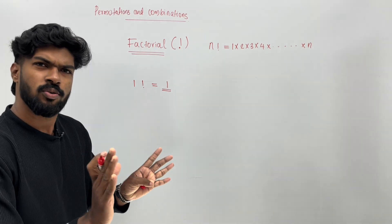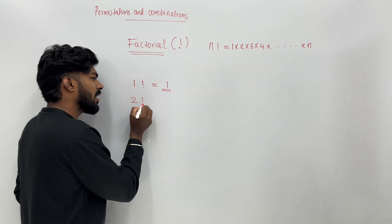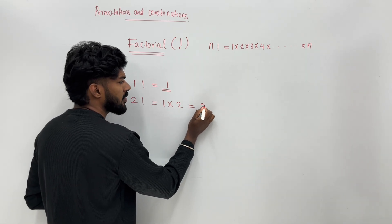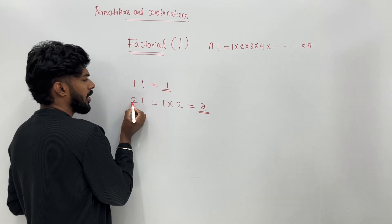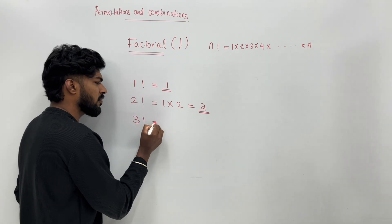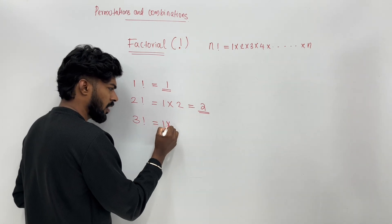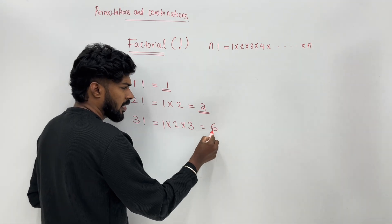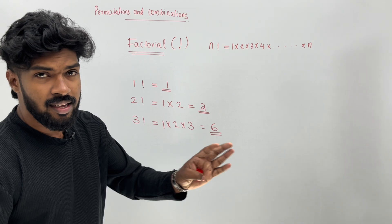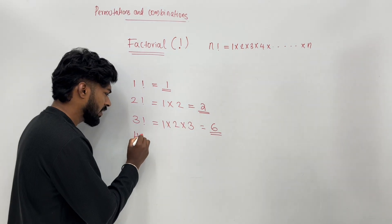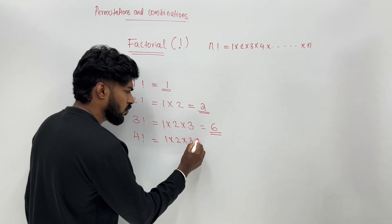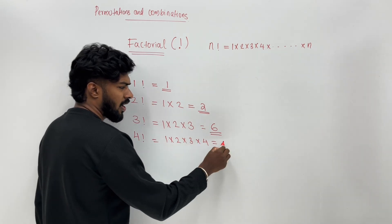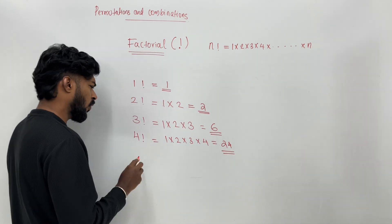If the factorial is right, 1 factorial is 1. For 2 factorial, the number is 1 in the 2nd, so the answer is 2. For 3 factorial, 1 is right. For 4 factorial: 1 into 2 into 3 into 4, multiply it — that gives 2, then 6, then 24.